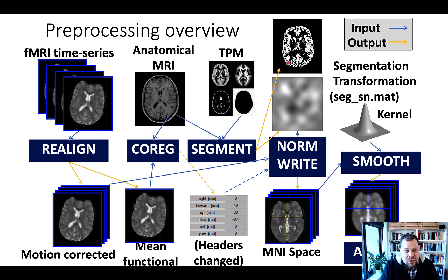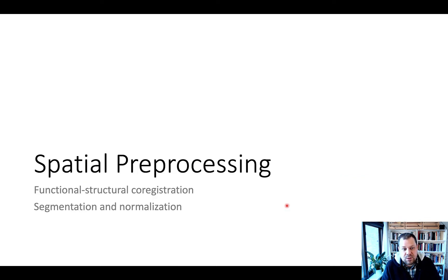Actually, they're quite sophisticated. And then this normalization that we get from the segmentation step can finally be applied to the functional images, so that they're all in the same space and any kind of statistics we perform on each individual can be done for the entire group of participants. So let's talk about spatial pre-processing, with the goal of cleaning up and preparing the data for group-level analyses.